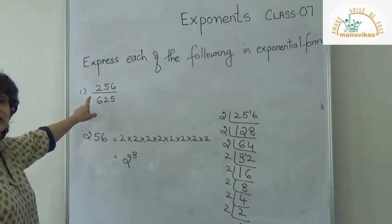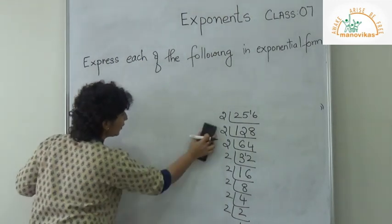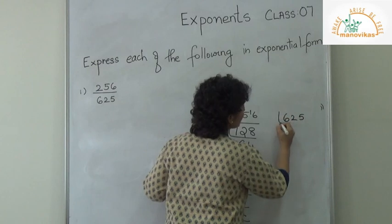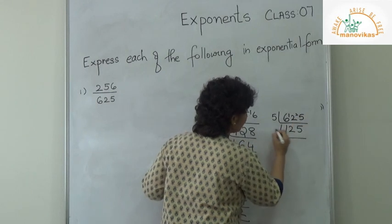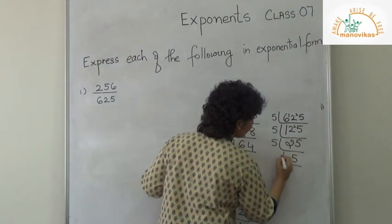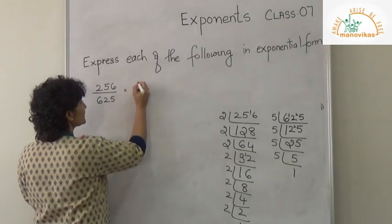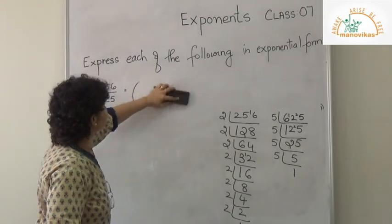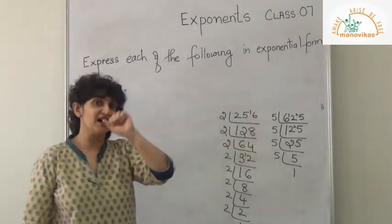Similarly, now let's do the fraction 256 over 625. I've already done 256, which gives 8 twos. Now for 625, let me prime factorize — dividing repeatedly by 5. I get 1, 2, 3, 4, 5 fives — that's 5 fours.